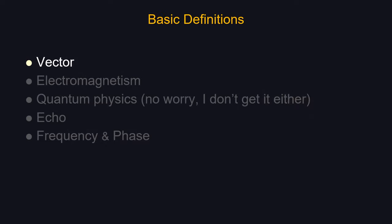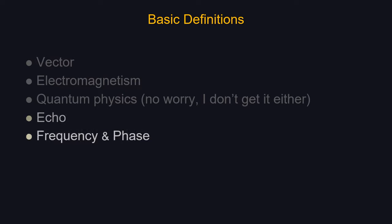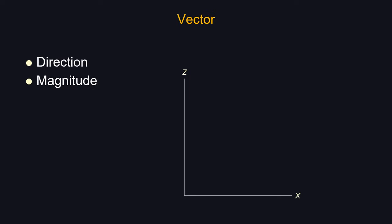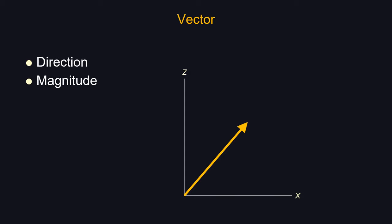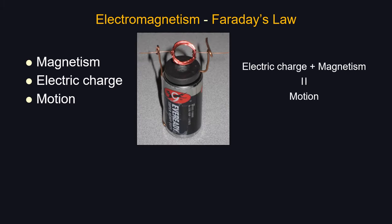There are a couple of basic definitions we need to go through: vector, electromagnetism, quantum physics — I'm going to pretend I know some quantum physics — echo, frequency, and phase. A vector has a direction and a magnitude; the size of the arrow signifies the magnitude. Vectors can be in different planes — z-axis, x-axis, or oblique — and can be broken down into additive component vectors. Electromagnetism, or Faraday's law: you have magnetism, electric charge, and motion. Combine any two and you can induce a third. Running current through a wire loop generates motion — that's how an electric motor works. Conversely, a moving magnet can generate electricity — that's how a hydroelectric dam works.